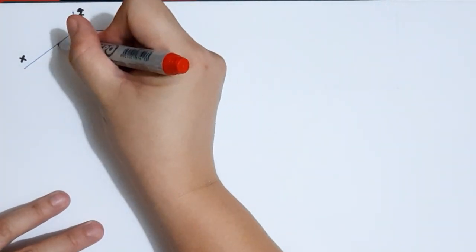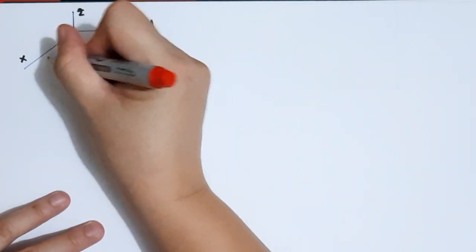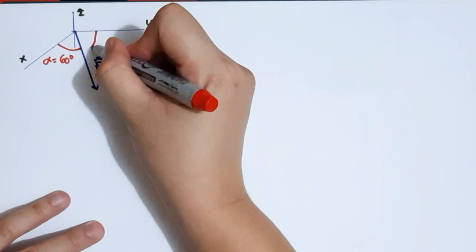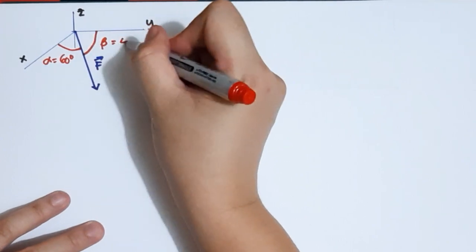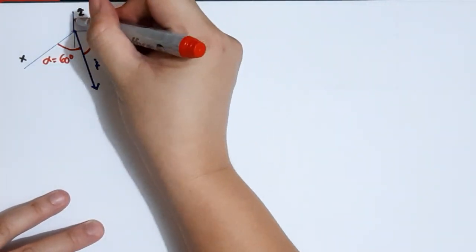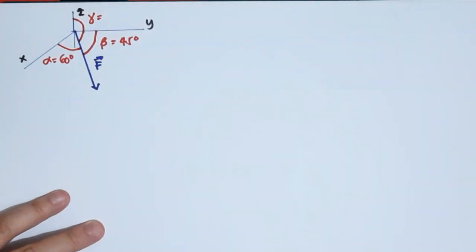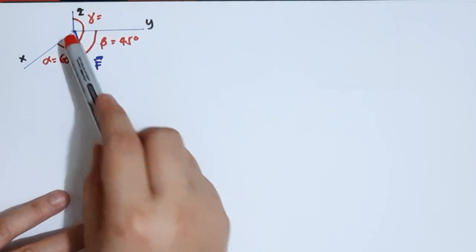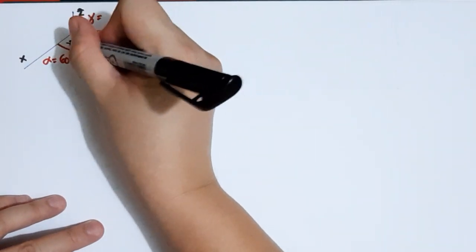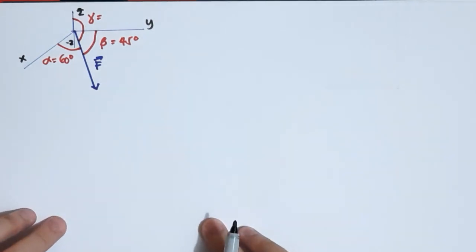Remember, alpha, beta, and gamma are angles measured from their respective positive axes. Alpha is shown here at 60 degrees, beta is 45 degrees, and gamma is unknown. Since our vector F is in the negative z-direction, we can say that gamma should be higher than 90 degrees in this problem.